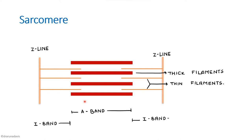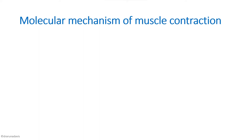It is called the A band because it is anisotropic to polarized light, and the light band is called the I band because it is isotropic to polarized light. In the center of the I band you can draw the Z line, so the region between the two Z lines is called a sarcomere. In the center of the dark band there is a lighter zone called the H zone, and in the middle of the H zone we have the M line. These are the important characteristics of a sarcomere that should be present when you draw and label it.